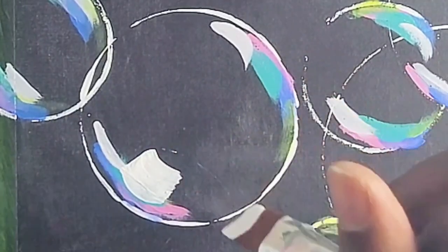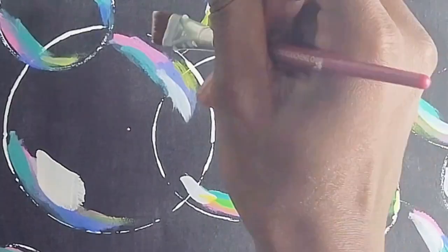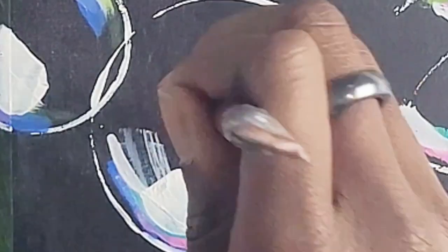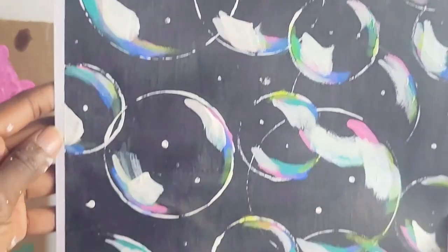Lastly, switch to a thicker brush and make thick short strokes of white paint slightly on top of the colors, creating the see-through look of bubbles. Finally, make tiny white dots inside the background of your painting. And there you have it, you've made bubbles.